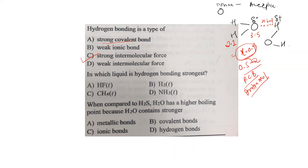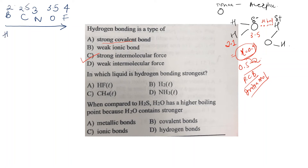The next question is: in which liquid is hydrogen bonding strongest? We look at trends in the periodic table. Going from left to right — boron, carbon, nitrogen, oxygen, fluorine — electronegativity increases. Fluorine has the highest electronegativity. Hydrogen has an electronegativity of 2.1, and fluorine's is approximately 4.0, giving a difference of about 1.9. This means hydrogen fluoride has the strongest hydrogen bond. Highest electronegativity gives rise to the strongest hydrogen bond, hence HF carries the strongest hydrogen bonding.